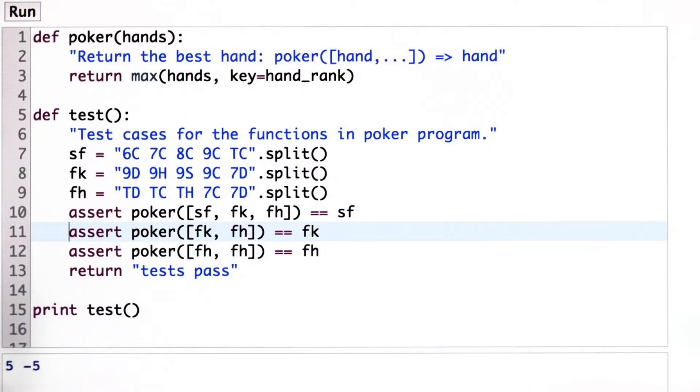Now, one important principle of testing is to do extreme values. In some sense, this is kind of an extreme value. We're testing one hand against itself. But there are other types of extreme values.